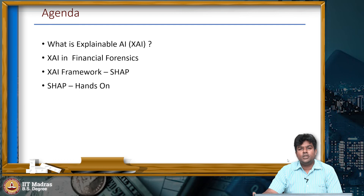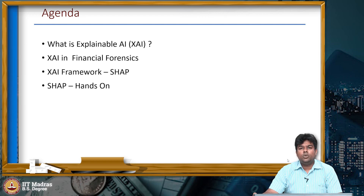Hi everyone, welcome back to another session in Financial Forensics. My name is Prasanna and today we will learn about Explainable AI. In today's session, we will first try to understand what Explainable AI is, shortly called XAI, and how XAI is used in the finance industry specifically in fraud detection and forensics. We will learn the fundamental concepts of the SHAP framework, a widely used XAI framework, and use it to explain a fraud detection model built in an earlier session.